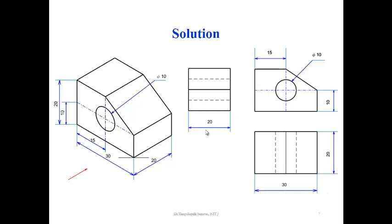The question arises: why do we select only the right hand side view instead of the left hand side view? In the right hand side view only, we can see all the particulars — that is the step details. That is why, to avoid mostly the use of dotted lines, we have to select the views where the maximum particulars or details are available. According to the first angle projection, the right hand side view has been shown on the left hand side.